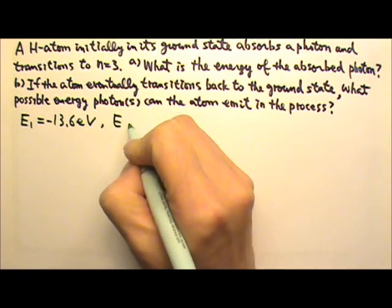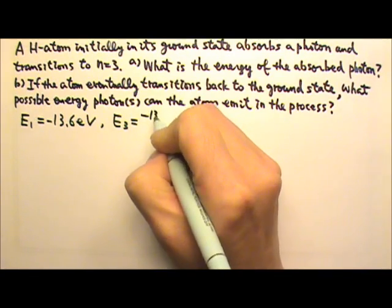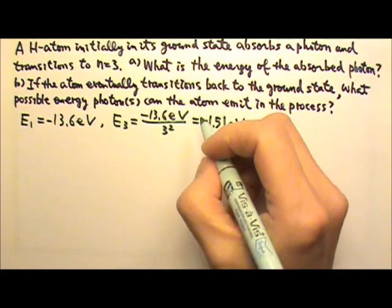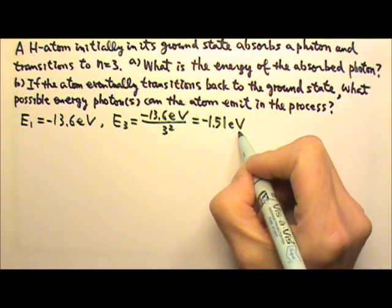The energy for n equals 3 would be negative 13.6 eV over 3 squared, and this gives me negative 1.51 eV.